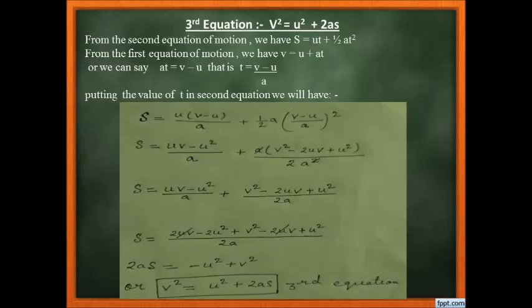The third equation of motion is: v² = u² + 2as. It can be used to find velocity when distance is given. To derive it, we need both the first and second equations. From the second equation: s = ut + ½at². From the first equation: v = u + at, so t = (v − u)/a.